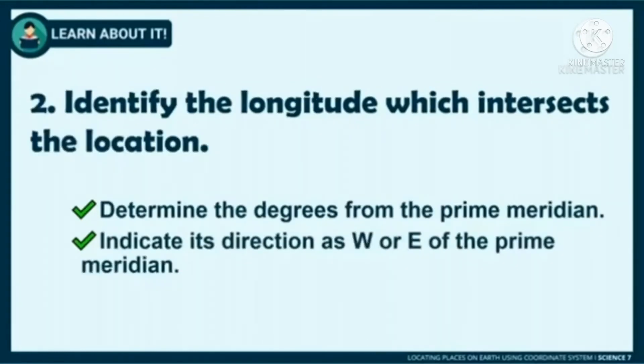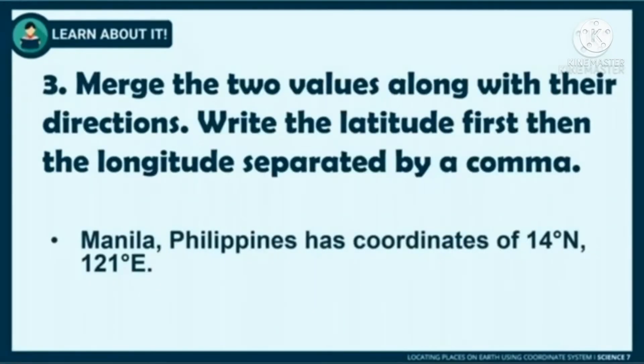Second, identify the longitude which intersects the location. Use the prime meridian as the reference point and determine the distance or degrees from it. And after getting the value, indicate the place's direction as east or west from the prime meridian.